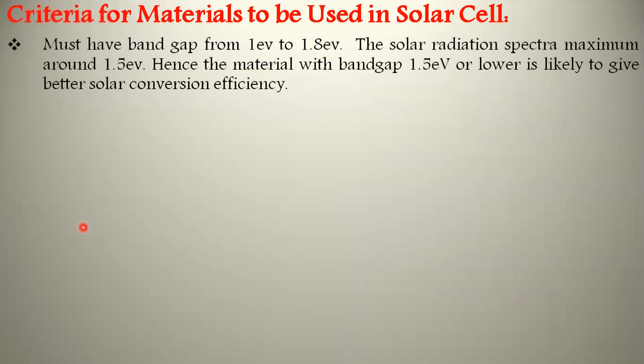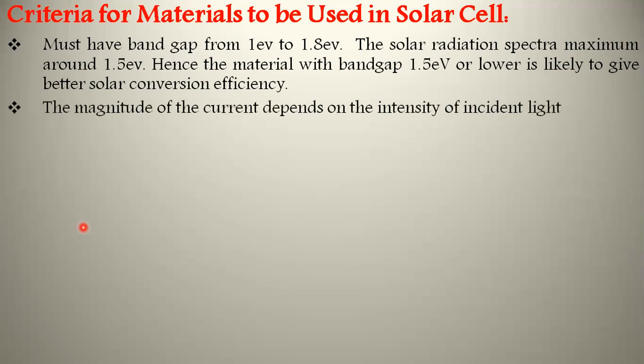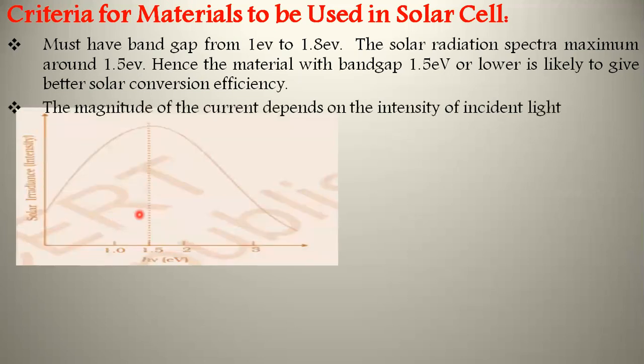The semiconductor material should have bandgap in the range of 1 eV to 1.8 eV, because the solar radiation spectrum is maximum around 1.5 eV. Hence, material with bandgap around 1.5 eV is likely to give better solar conversion efficiency, as it can absorb more solar irradiance.